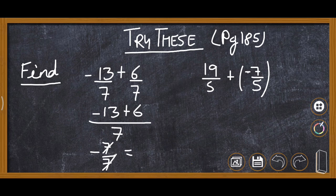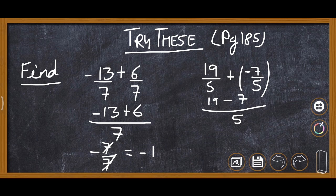So -7 upon 7, we cancel and the answer is -1. In the second question, the denominator of both numbers is 5. We write 5 in the denominator, then 19 + (-7), which is 19 - 7 = 12 upon 5. Converting to a mixed number, the answer is 2 and 2/5.